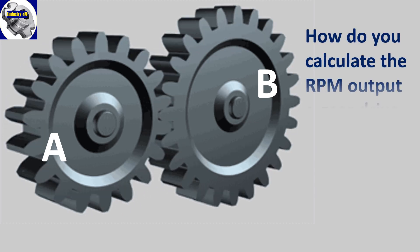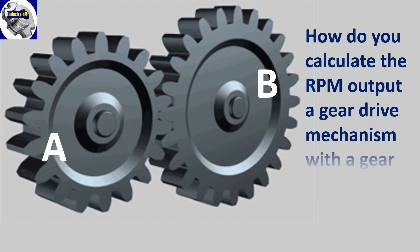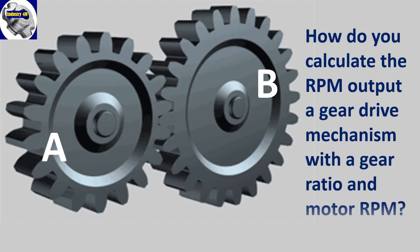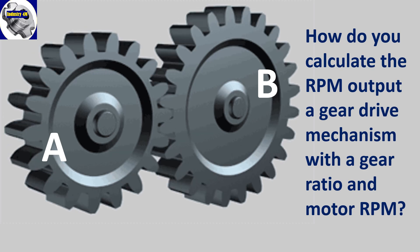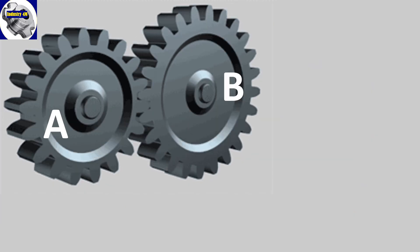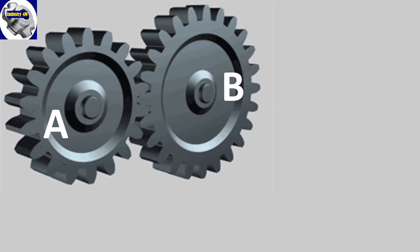How do you calculate the RPM output of a gear drive mechanism with a gear ratio and motor RPM? We need to understand this question by knowing these key factors.